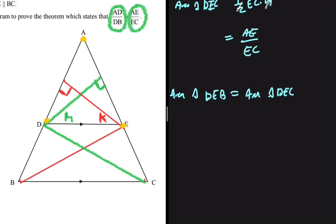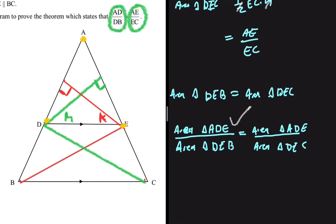Then the area of triangle ADE divided by the area of triangle DEB will be equals to the area of triangle ADE divided by the area of triangle DEC.